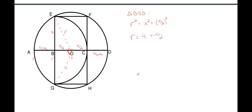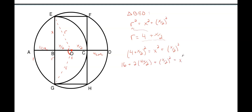Now I solve for X with some algebra. Expanding: 16 + 2·(4)·(X/2) + (X/2)² = X² + (X/2)². The (X/2)² terms drop out, and we get 16 + 4X = X². Rearranging gives us X² − 4X − 16 = 0 — a quadratic equation.